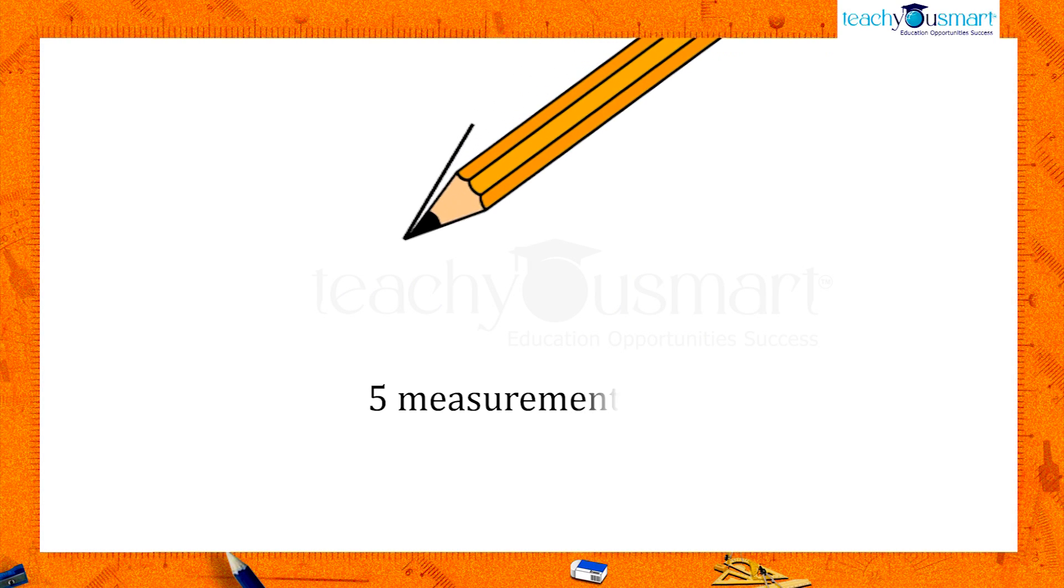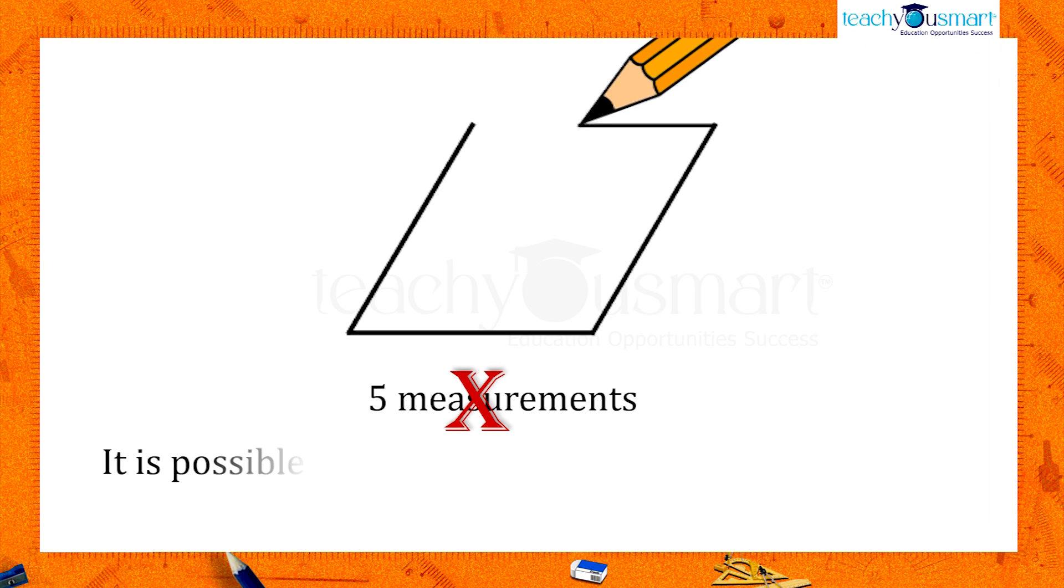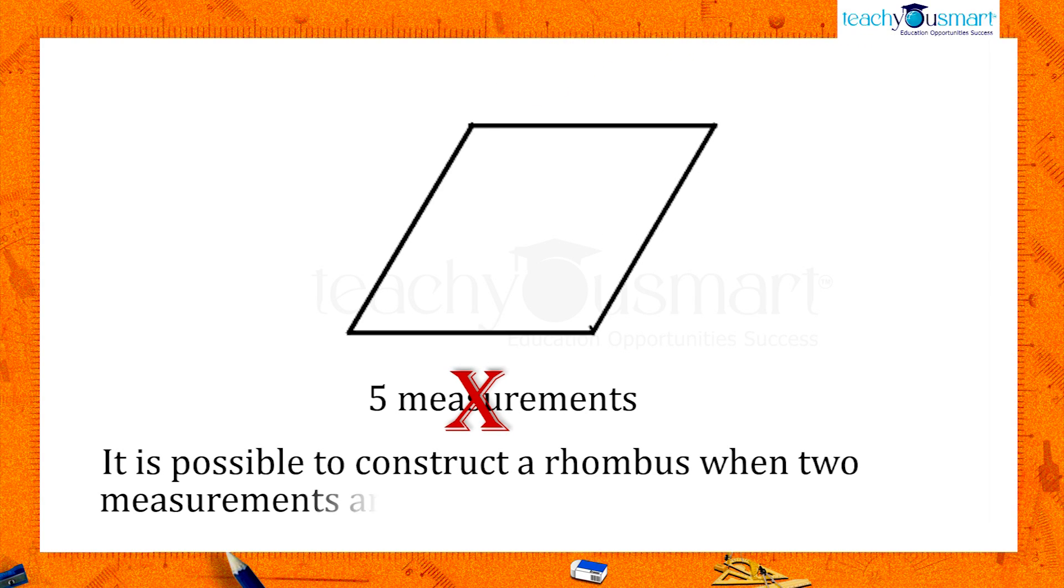As we see in the case of square, rhombus does not require five measurements to construct it. It is possible to construct a rhombus when two measurements are given.